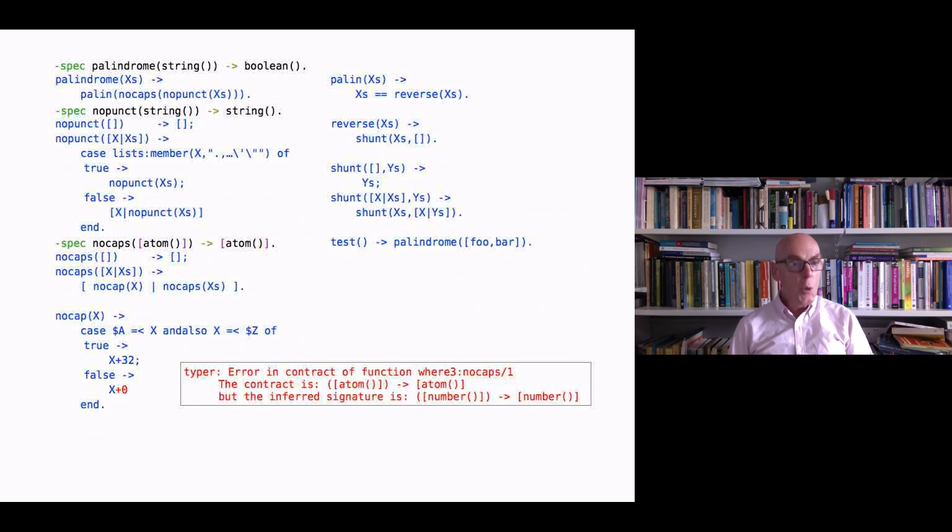That is, if you like, the dual of what normally happens with types - that if there's any way of it producing an error you are told that because it's been caught at compile time. Success typing is the dual. It will only give you an error at compile time when it is certain that it will cause an error at runtime. So it's more permissive, but it means some type errors we might like to catch are not going to be caught.